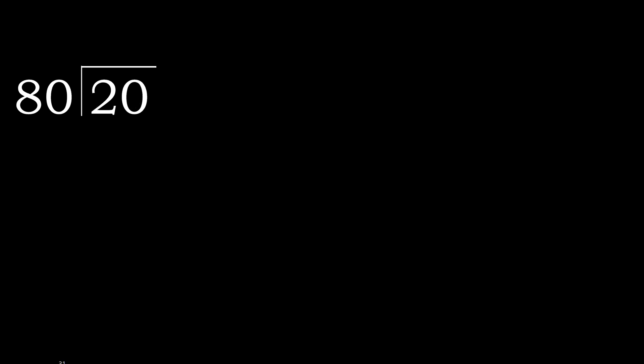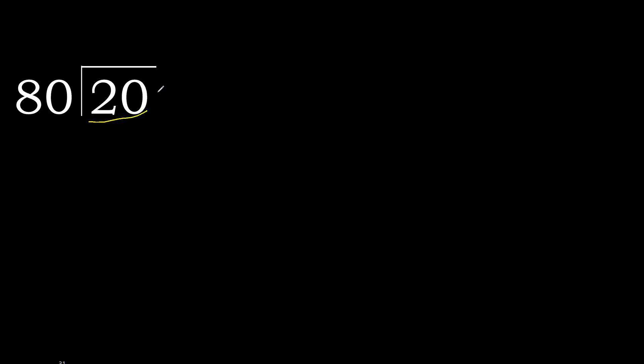20 divided by 80: 2 is less, therefore next; 20 is less, therefore next. There is no number, therefore complete — always complete with 0.